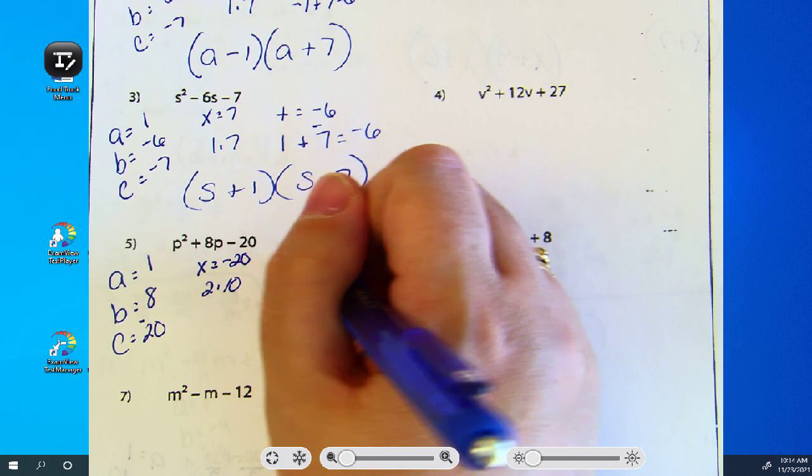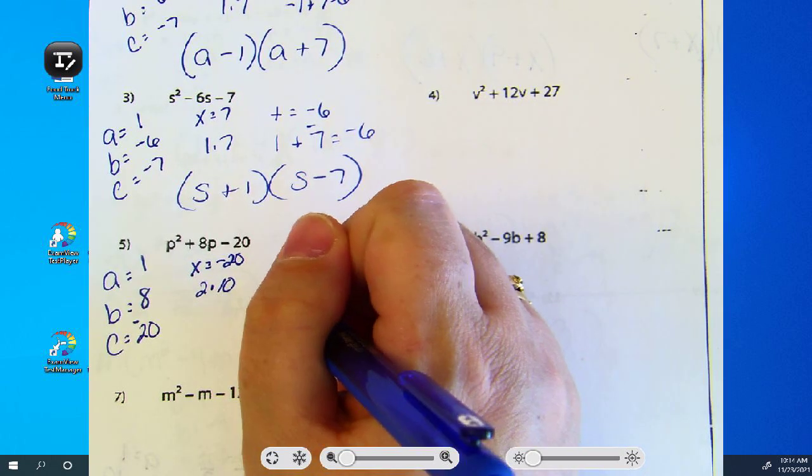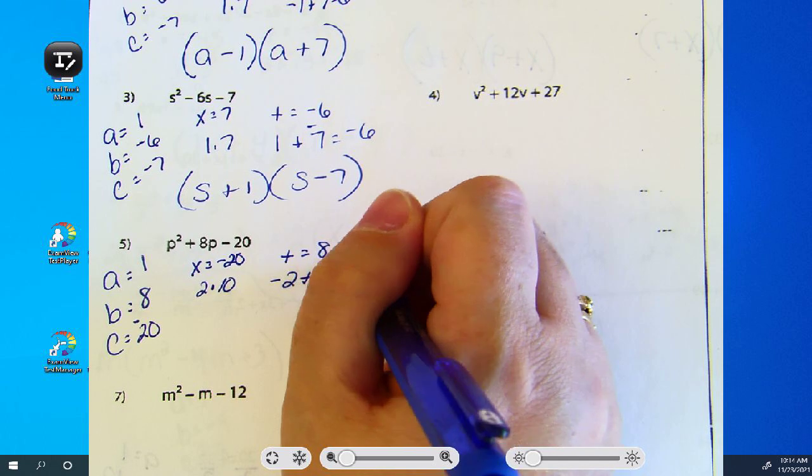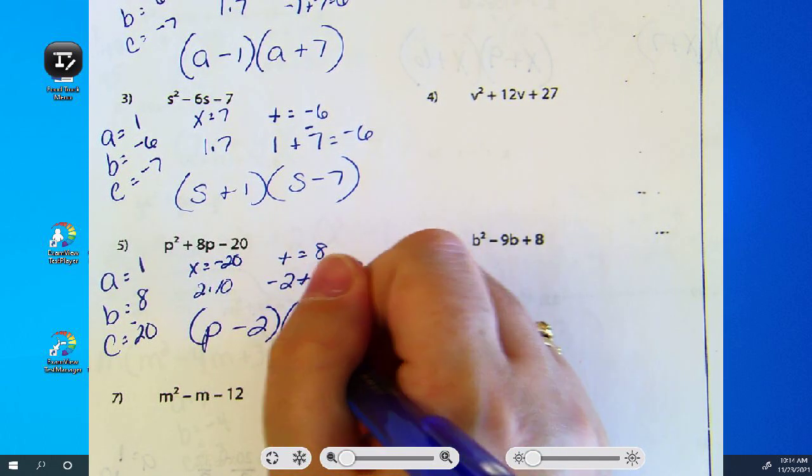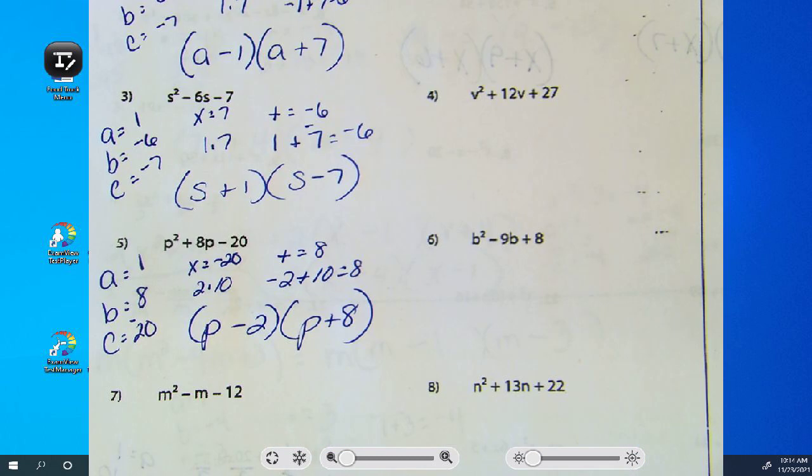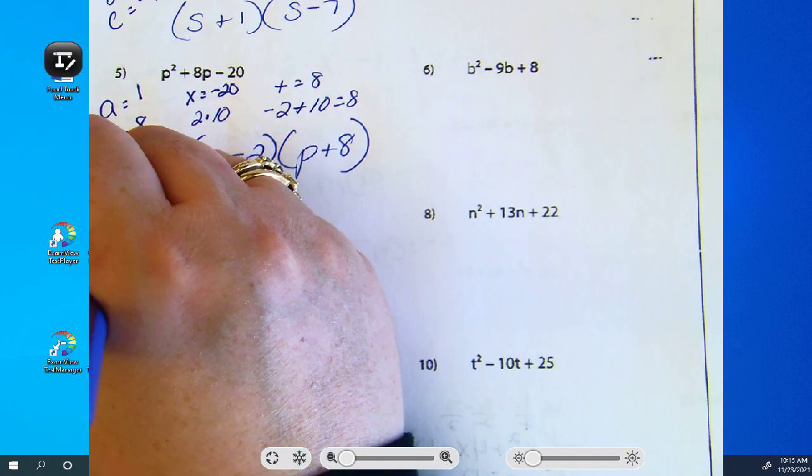How did you add them to get eight? Negative two. Negative two. Good. What's A, B, and C? Questions?